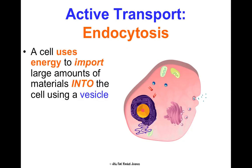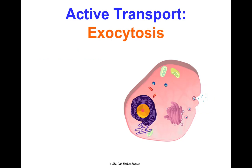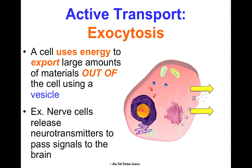Endocytosis is when the cell uses energy to import large amounts of material into the cell using a vesicle — wrapping around the particles to bring them into the cytoplasm. For example, white blood cells engulf bacteria this way to fight infection. Exocytosis is the reverse — the cell uses energy to export larger materials out of the cell via a vesicle. Nerve cells use exocytosis to send neurotransmitters and pass signals to the brain.